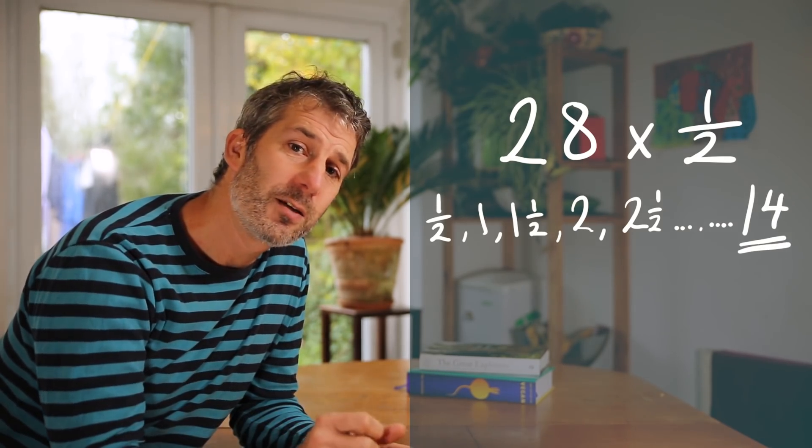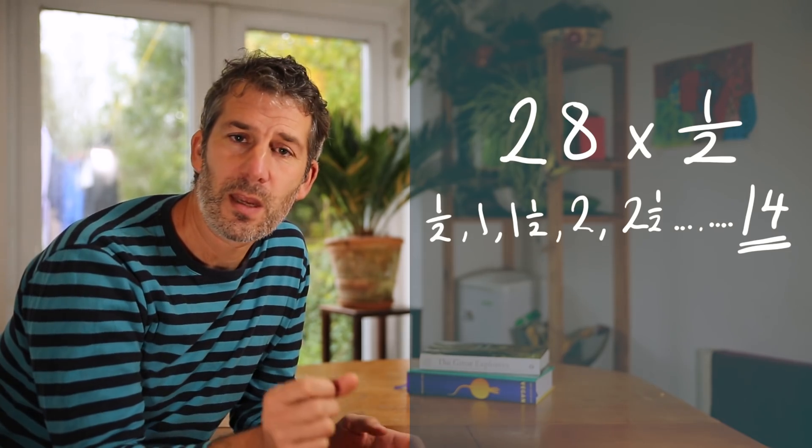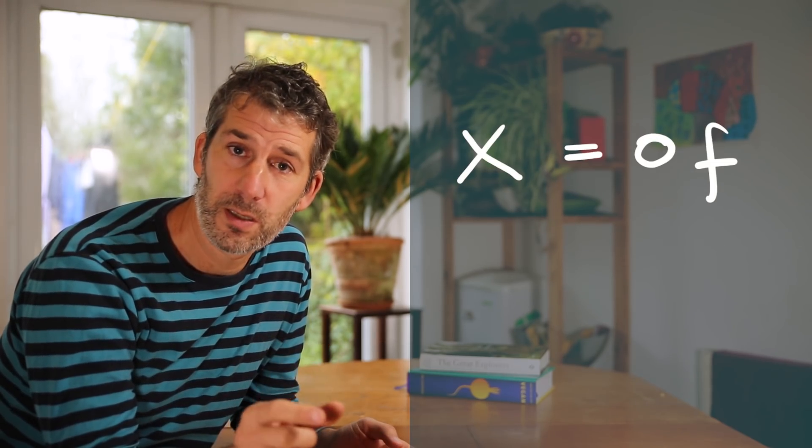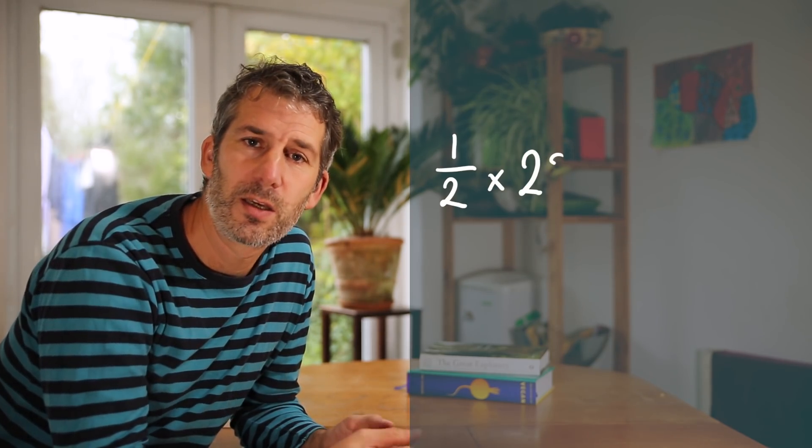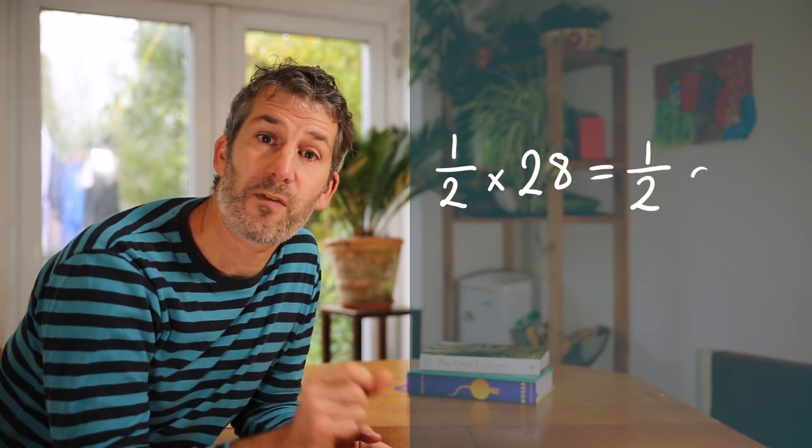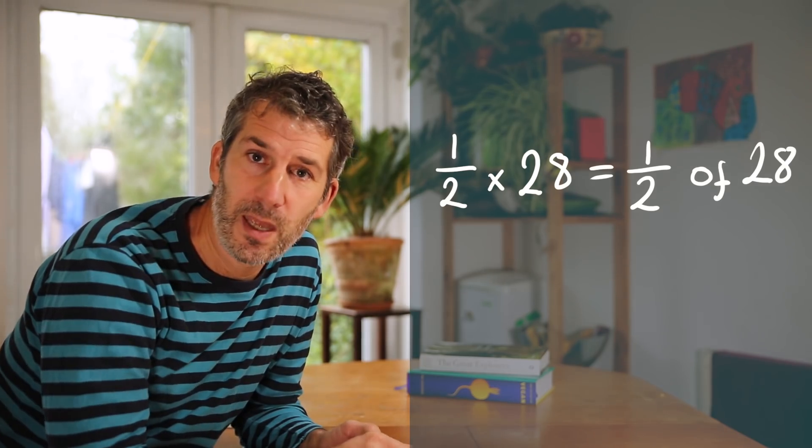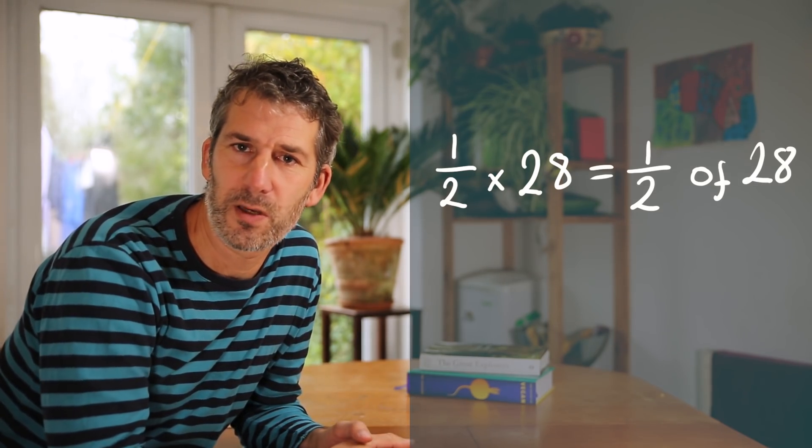Now that's okay but there's an easier way. I think it's a big help if you think of times or multiply as meaning of. So when you see times you can just replace that with of. So in this example instead of thinking of it as a half times 28 you can instead think of it as a half of 28. And to find a half of something you just divide by 2.